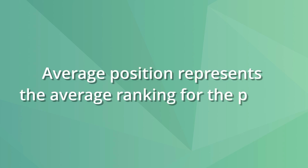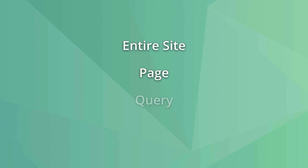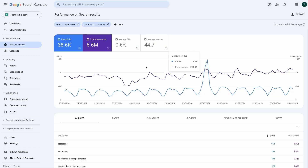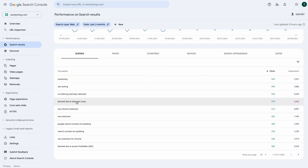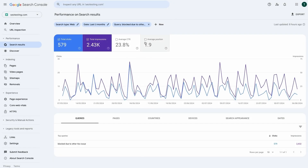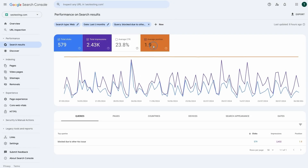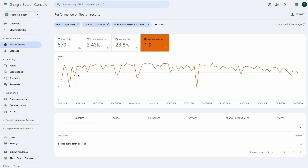The average position value in Google Search Console represents the average rank on the search engine results page for the selected period. Google Search Console can show you the average position for the site as a whole, by page, query, and queries on a specific page. For example, in the last 3 months our site ranked quite well for the query 'blocked due to other 4xx issues' with an average position of 1.9.